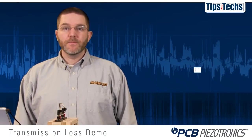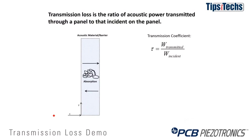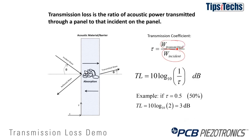We'll start with a little bit of theory. The transmission coefficient for a material is defined as the amount of sound power transmitted through that material divided by the amount of sound power incident on the material. Here you can see an example: there's an incident sound wave, a reflected sound wave which for transmission loss we ignore, and then some amount of sound energy transmitted through that material. Transmission loss is typically specified in decibels — we take 10 times the base-10 logarithm of 1 over the transmission coefficient. So for example, if your transmission coefficient is 50% or 0.5, your transmission loss would be 3 dB.